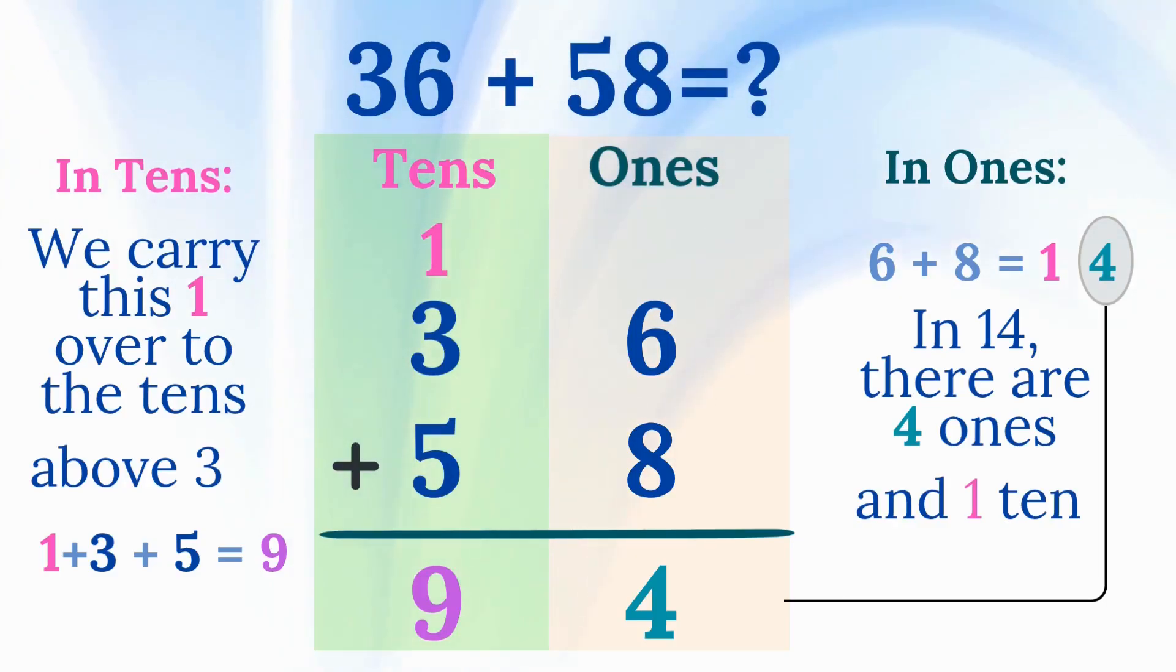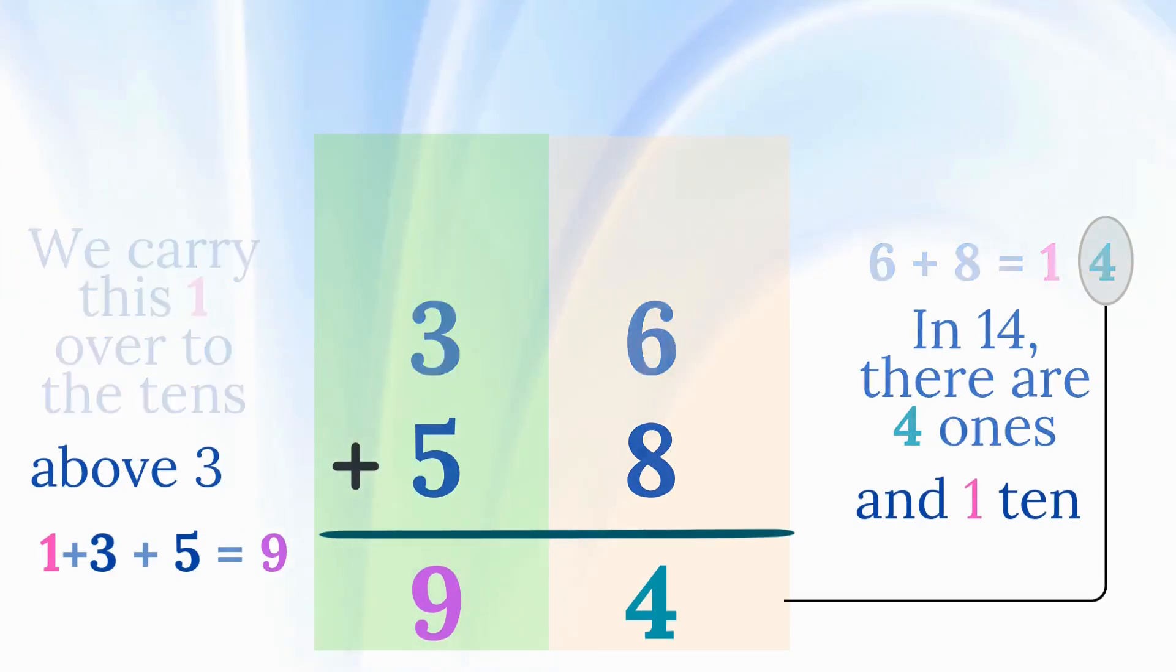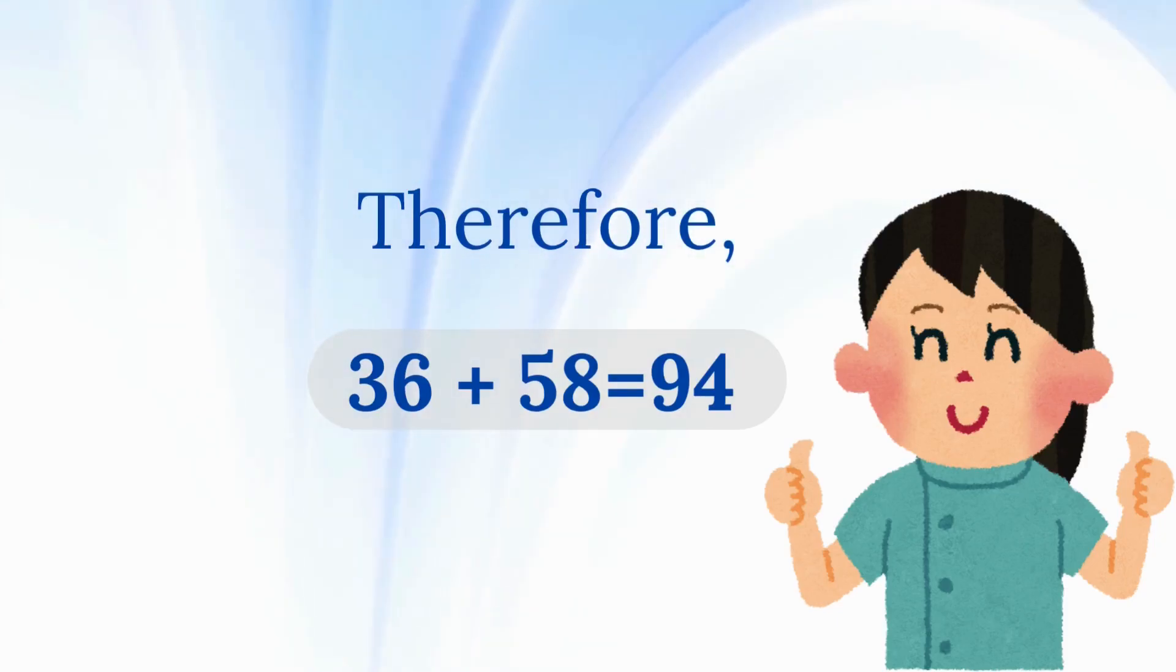The 1 in 14 represents one 10, so we carry this one over to the tens place and write it above the number 3. Now we add the numbers in the tens place. 1 plus 3 plus 5 equals 9. The total is 94. Therefore, 36 plus 58 equals 94.